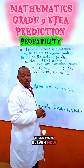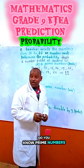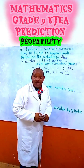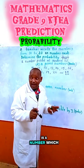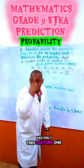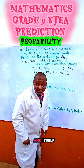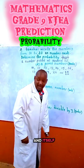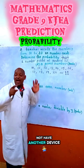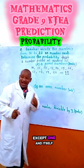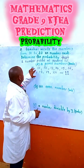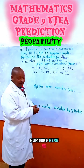Now, do you know prime numbers? A prime number is a number which has only two factors — one and itself. That number does not have any other divisor except one and itself. So, which ones are prime numbers here?